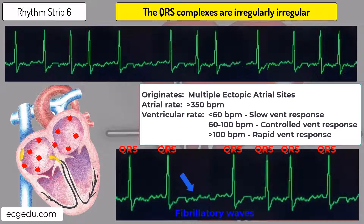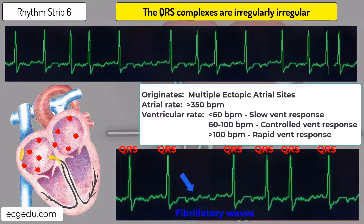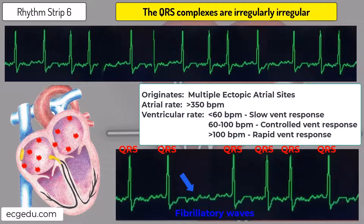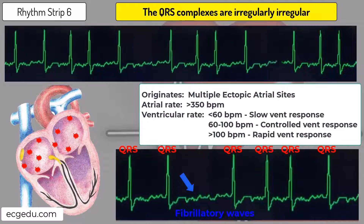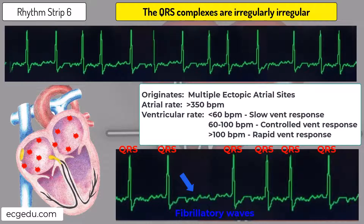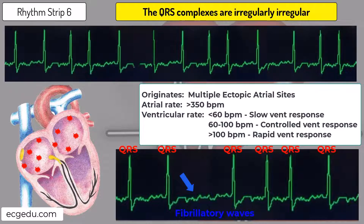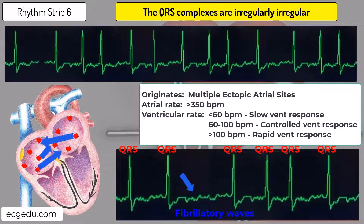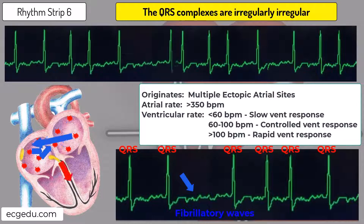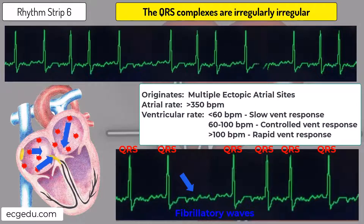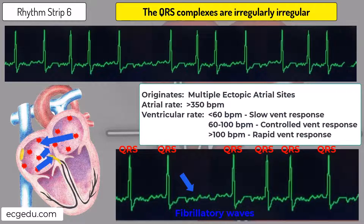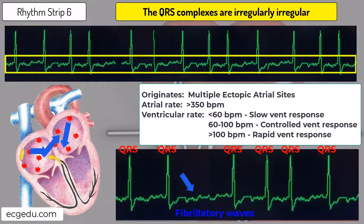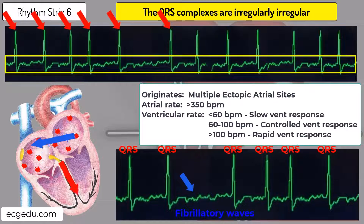The atrial impulses bombard the atrioventricular node, but normally not all of these impulses can get through to the ventricles. In a normal heart, the ventricular rate is around 110 to 180 beats per minute. The ventricular rates vary depending on the health of the atrioventricular node and the medications the patient may be taking. Since the QRS complexes originate from the atrioventricular node, they appear narrow and normal looking. Here are the fibrillatory waves and here are the QRS complexes.